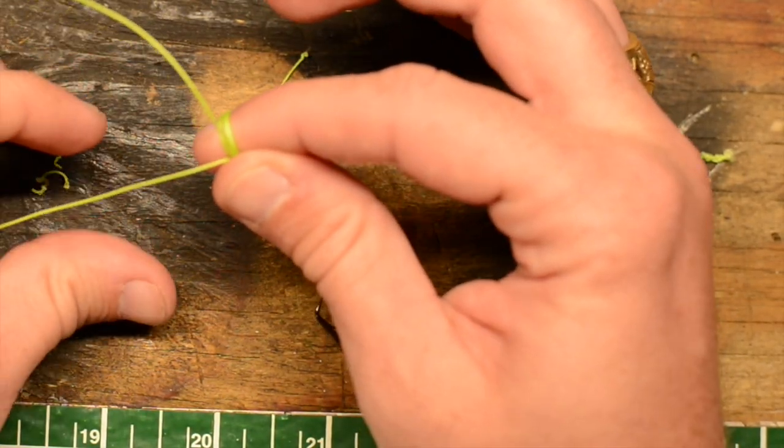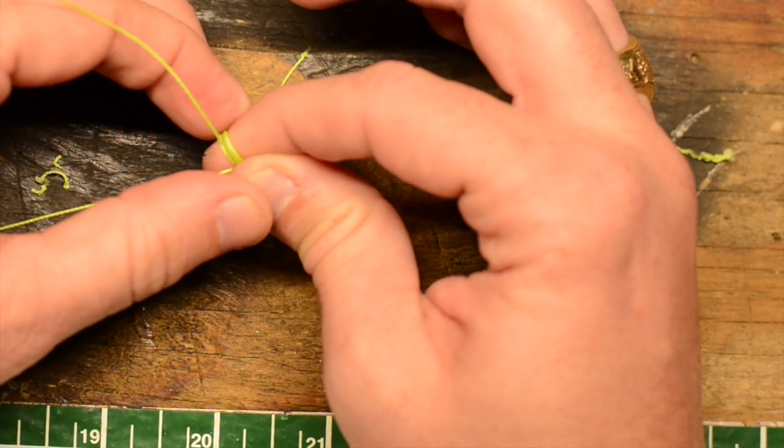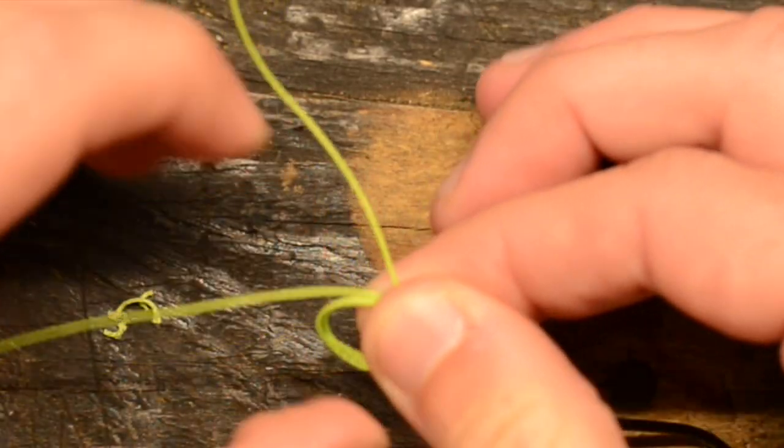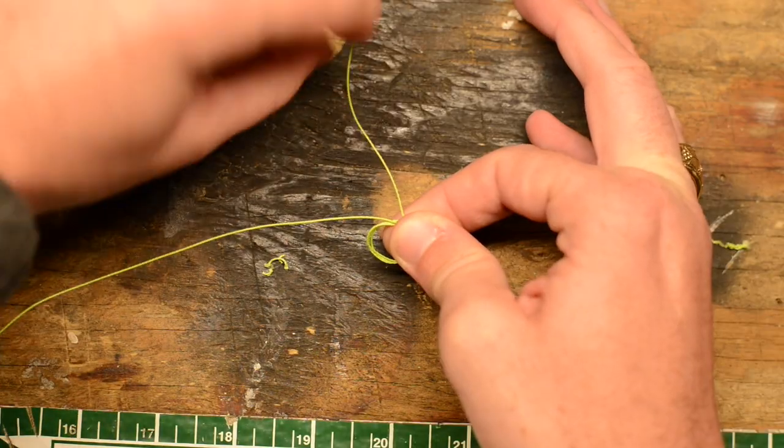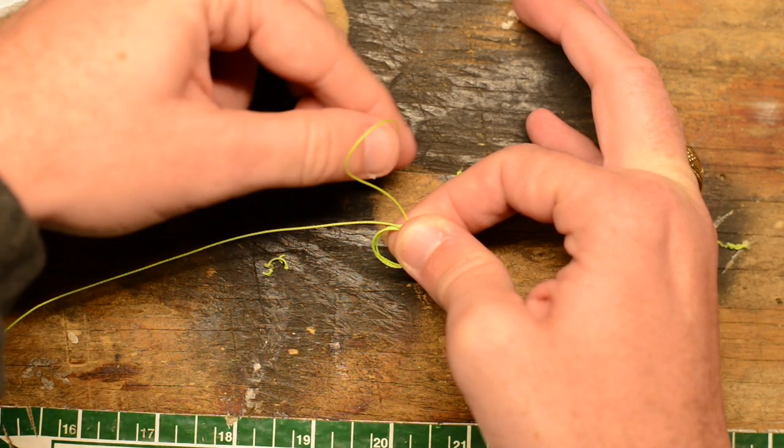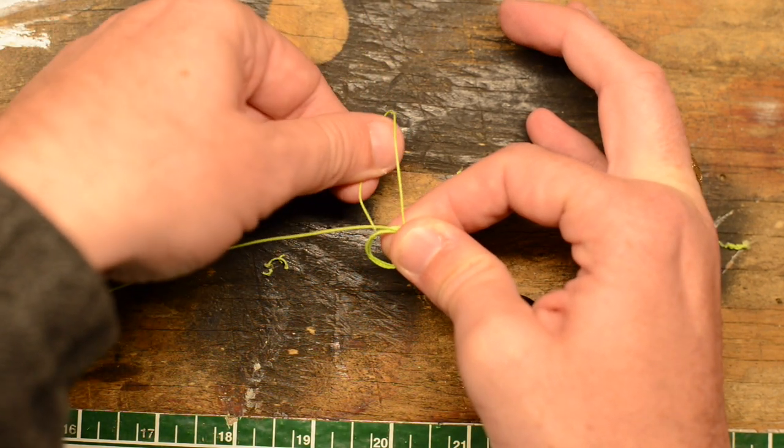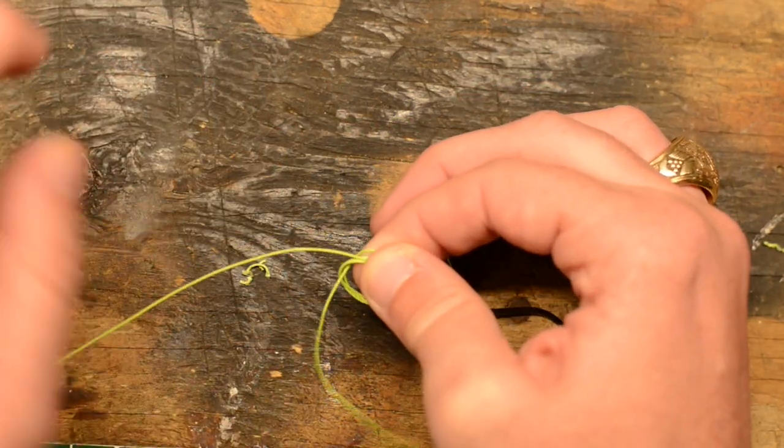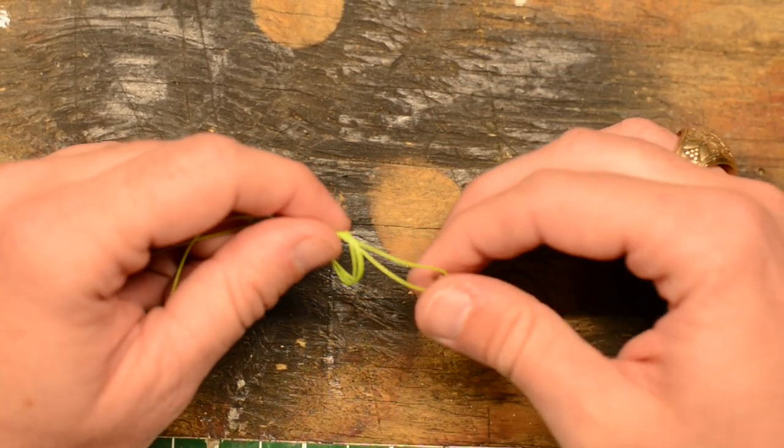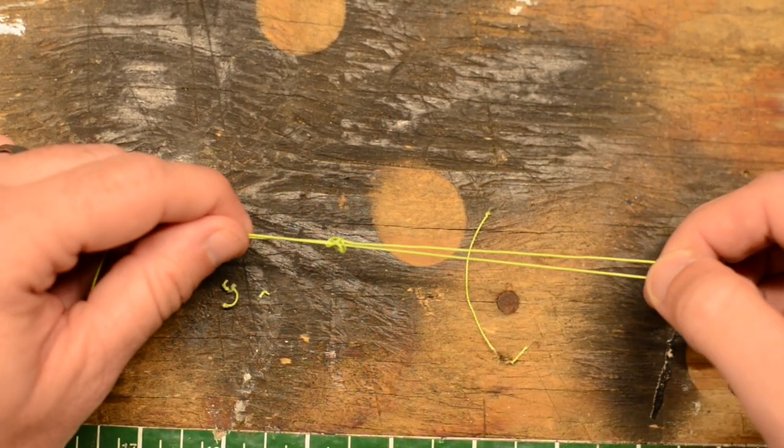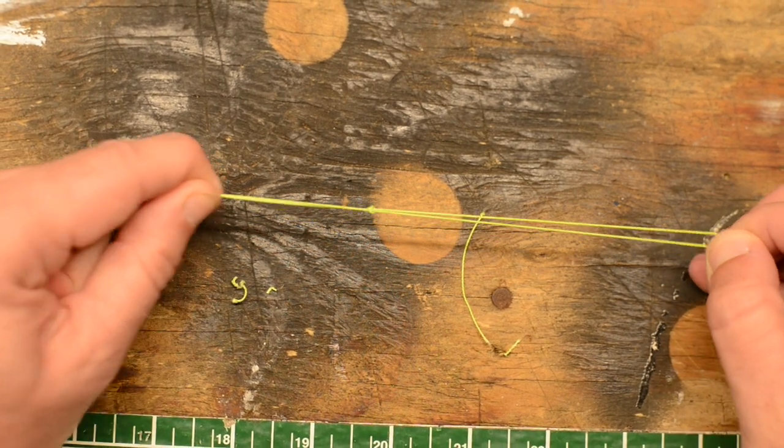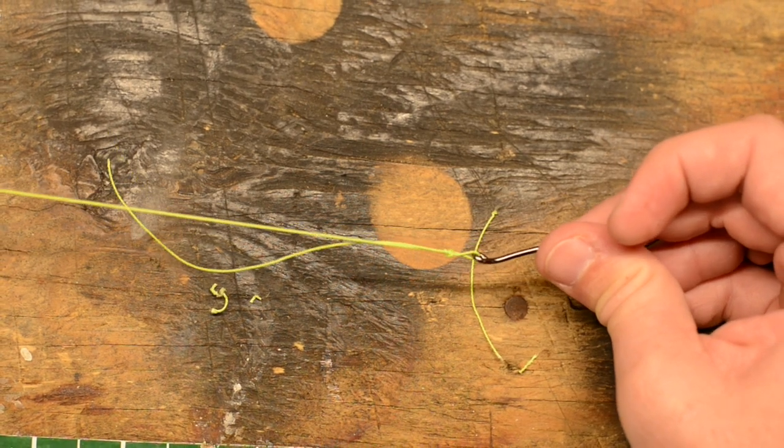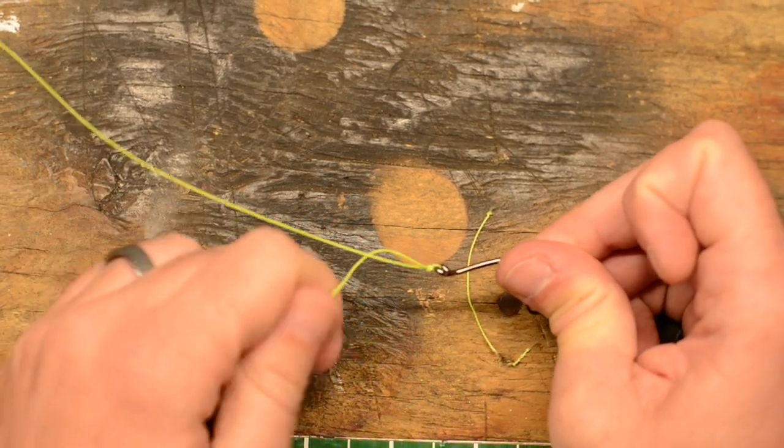And what you'll see is this has formed this loop down here. Now slide that loop off your finger while still holding it all together, and then what you're going to do is take your tag end and simply come back through that loop that you have formed. There you go. Now grab your main line, your tag end line, and your hook, start pulling them all in opposite directions of each other.